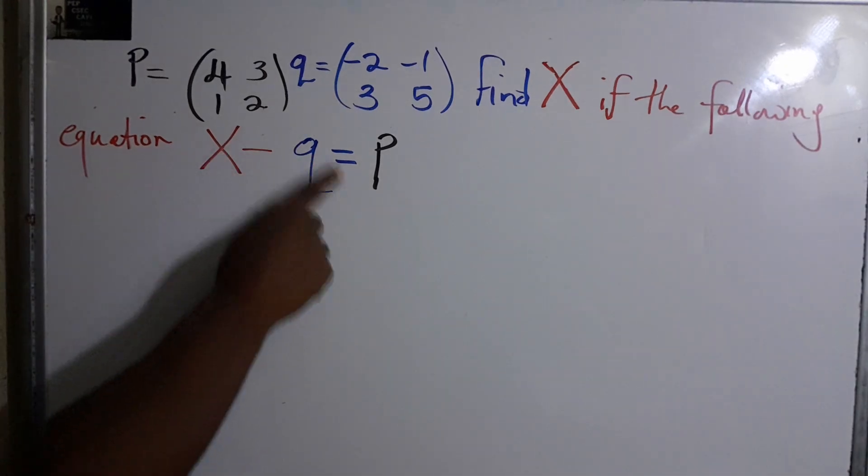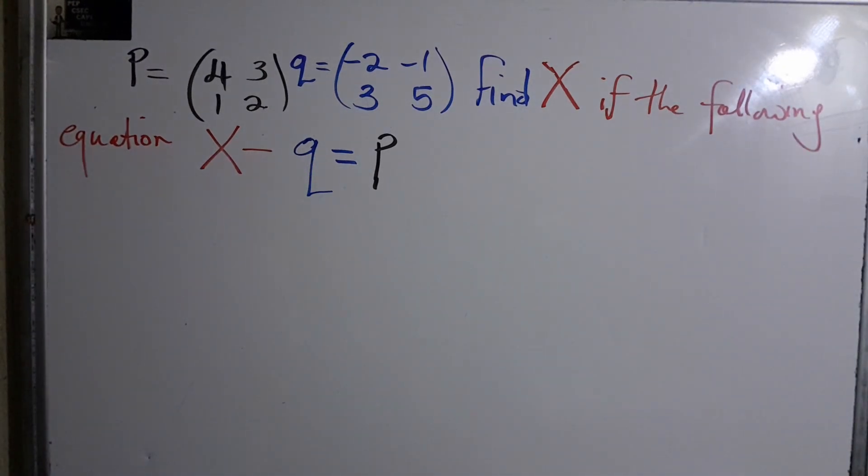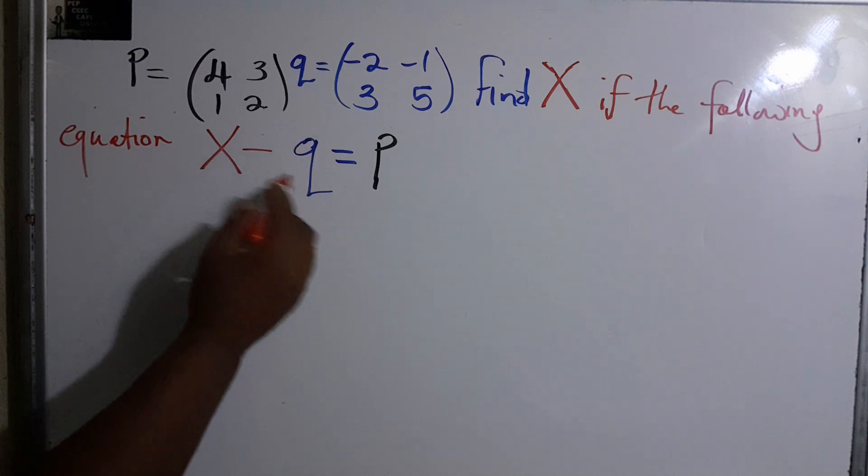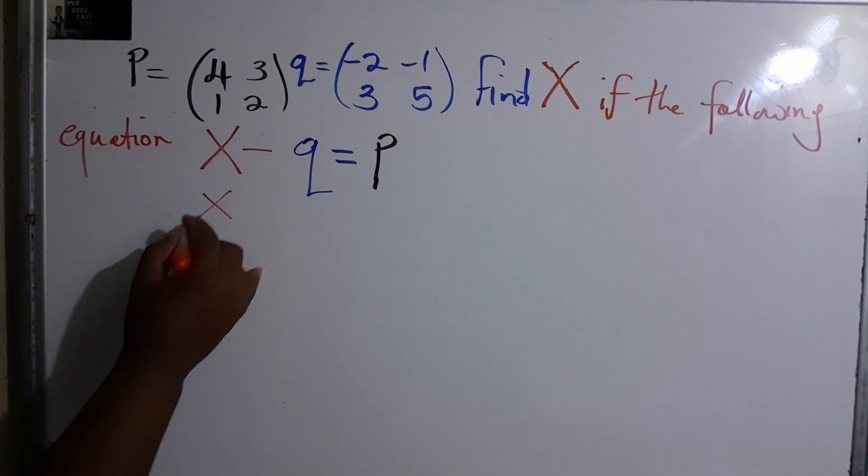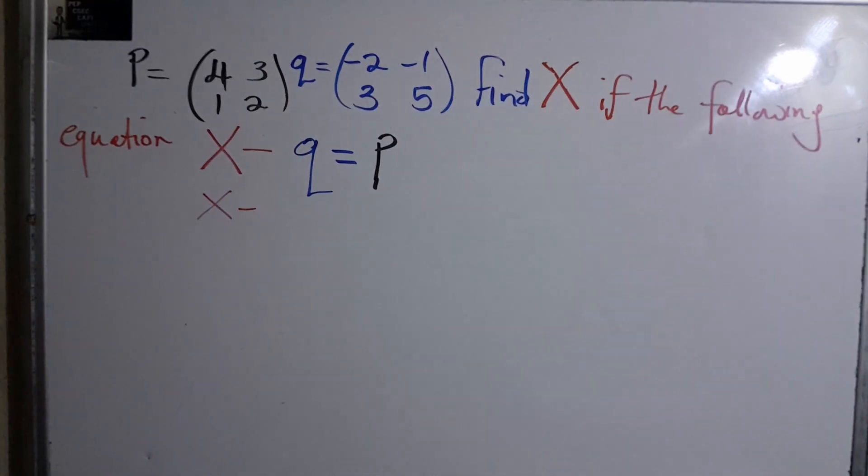What we need to do is take the opposite of whatever is happening here and get X by itself. If we have minus Q, the opposite would be to add Q.